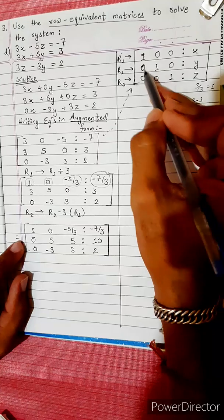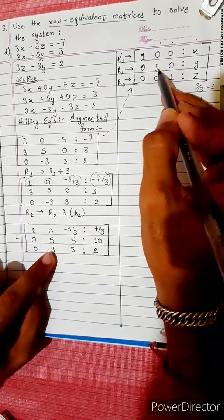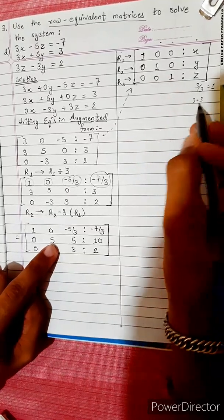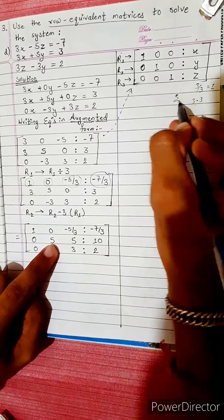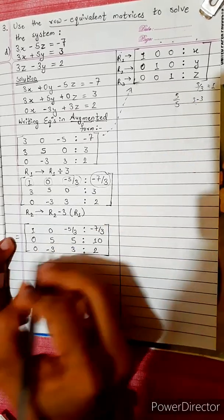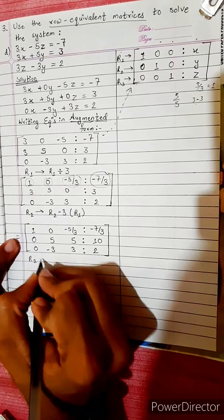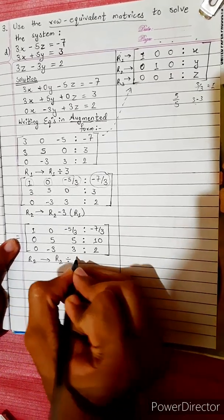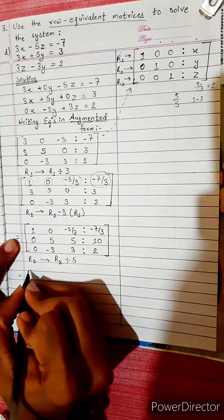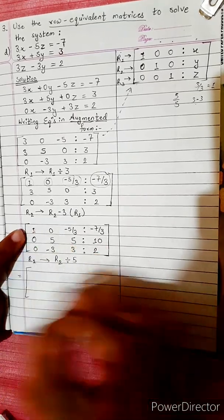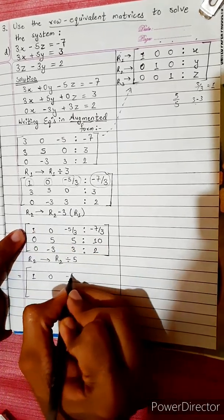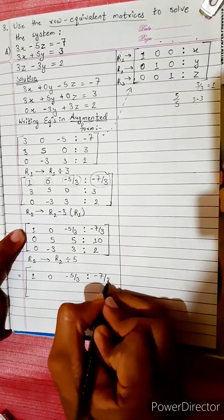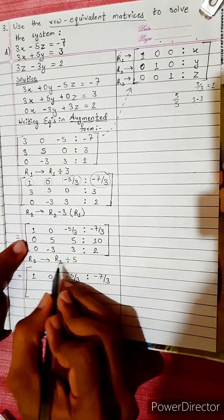Now we need a 1 in the pivot position. We have R1 as [1, 0, -5/3 | -7/3]. We change R2 by dividing R2 by 5. So 0/5 = 0, 5/5 = 1, 5/5 = 1, and 10/5 = 2. The new R2 becomes [0, 1, 1 | 2].